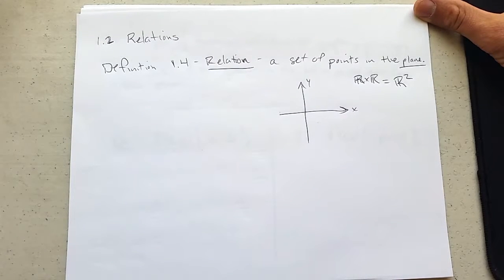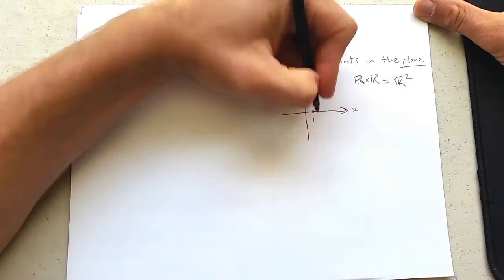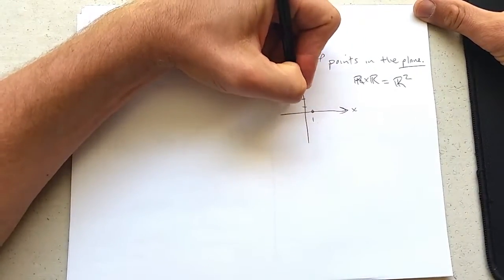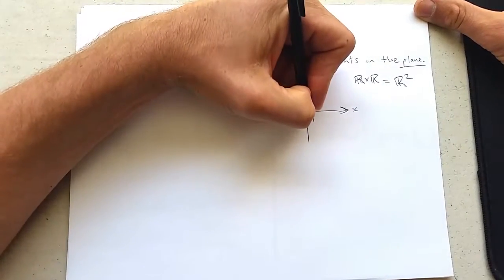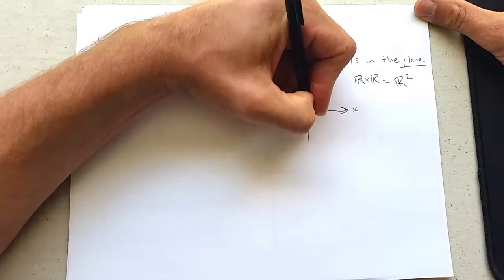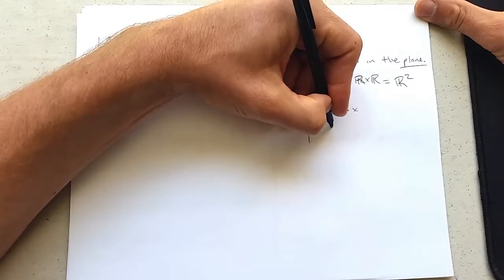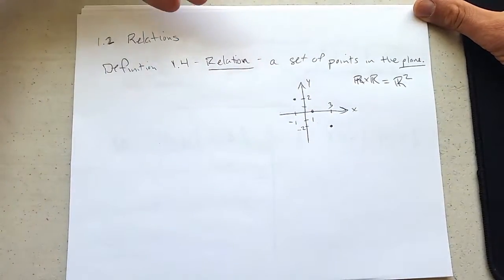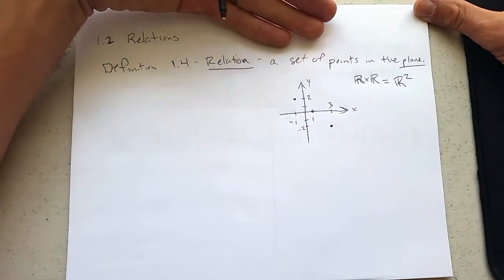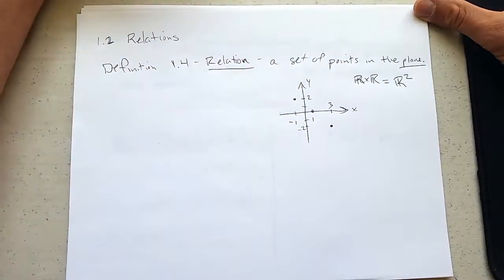Now a set of points in the plane. Let's look at some examples. I can represent graphically. Maybe we have a point right here, and we'll put a point over here, and we'll just put one more maybe down here. So here are three points. Is this a relation? It is a set of three points in the plane. Okay, here's graphical representation.